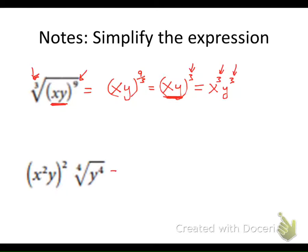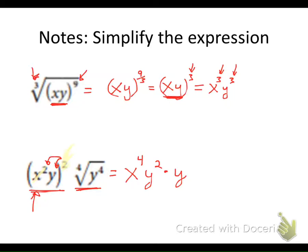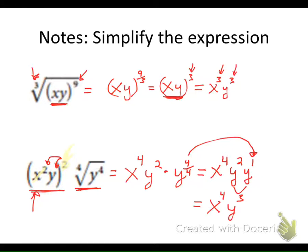For the second example I can simplify step by step. This exponent applies to all the values inside, so X squared raised to the second power becomes X to the fourth, and Y squared because that exponent also applies to Y. Then we simplify the remaining part — the exponent is the numerator and the index is the denominator — giving Y to the first, since 4 over 4 is 1. Using basic exponent properties, Y squared times Y to the first adds to give Y cubed, and the final simplified expression is X to the fourth times Y cubed.